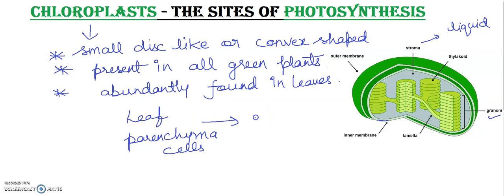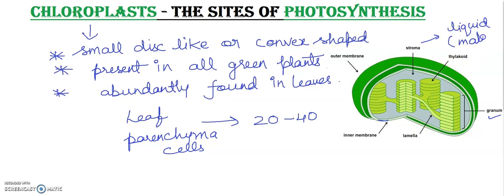Leaf parenchyma cells contain 20 to 40 chloroplasts. These chloroplasts are large organelles which are readily visible under a microscope. The structure of chloroplasts is a double membrane structure — the inner membrane lines the lumen of the chloroplast, and the fluid-filled space inside is called stroma.